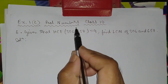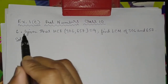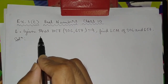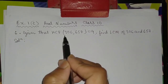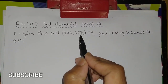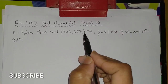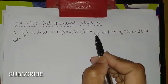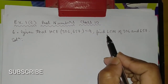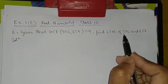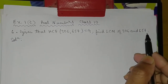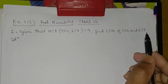Next class 1C, real numbers, class 10. Question number 6: find that HCF of 306 and 657 is equal to 9. Find LCM of 306 and 657.